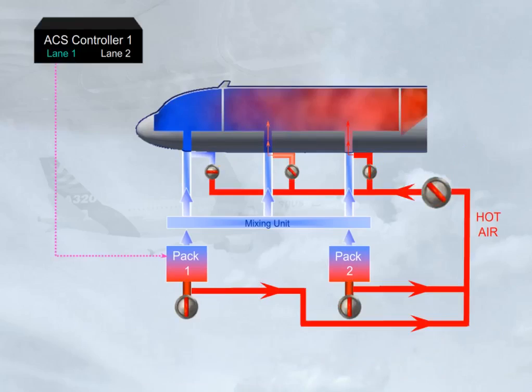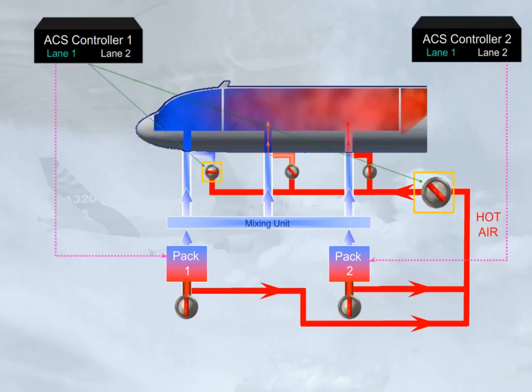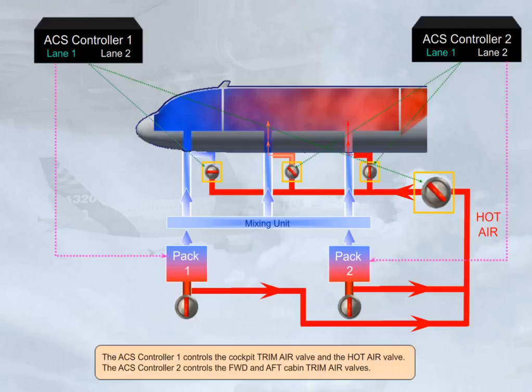ACS controller one controls the cockpit trim air valve and the hot air valve. ACS controller two controls the forward and aft cabin trim air valves.